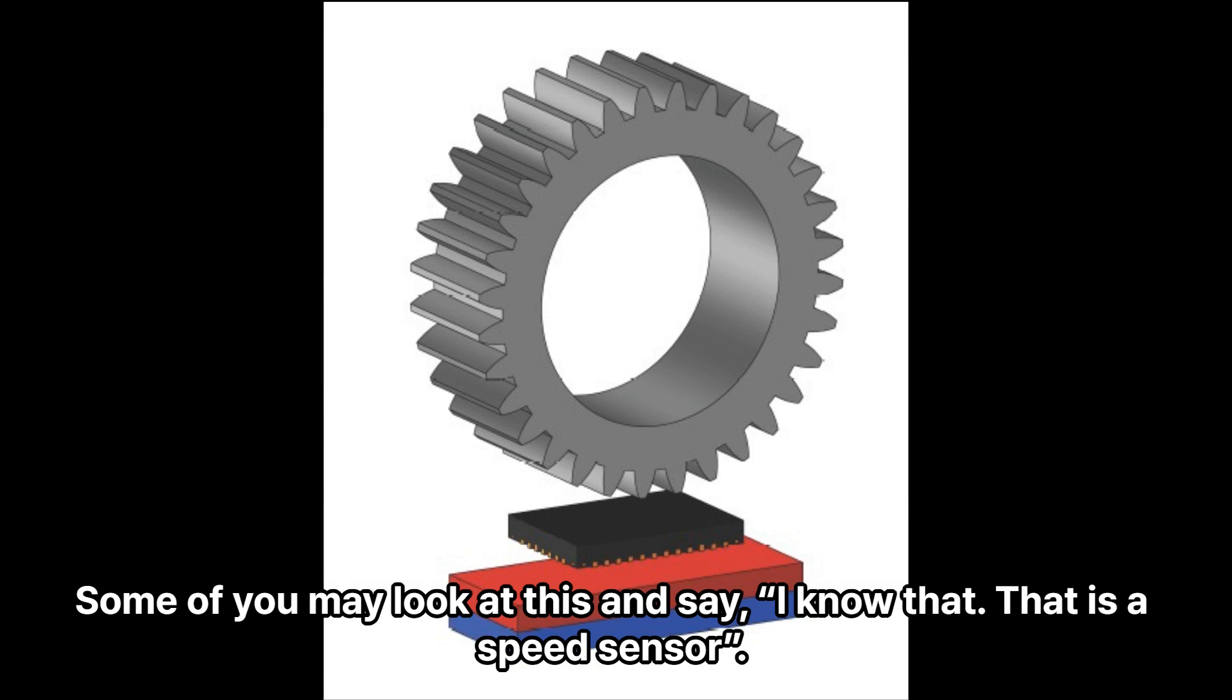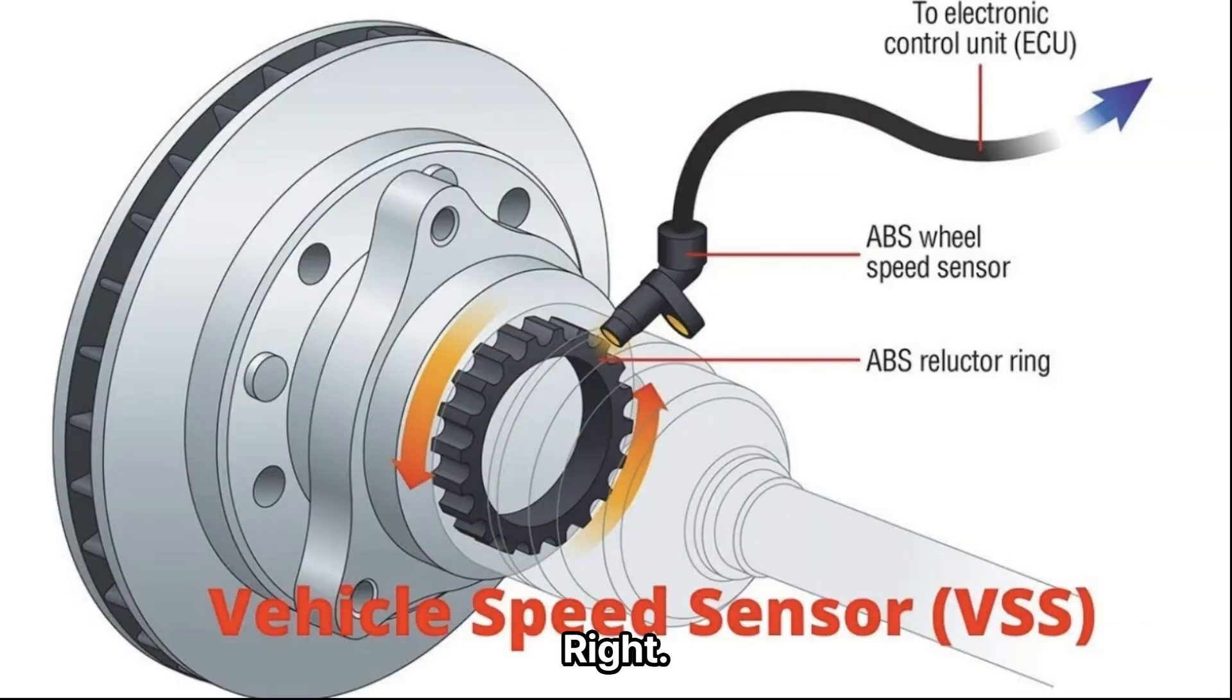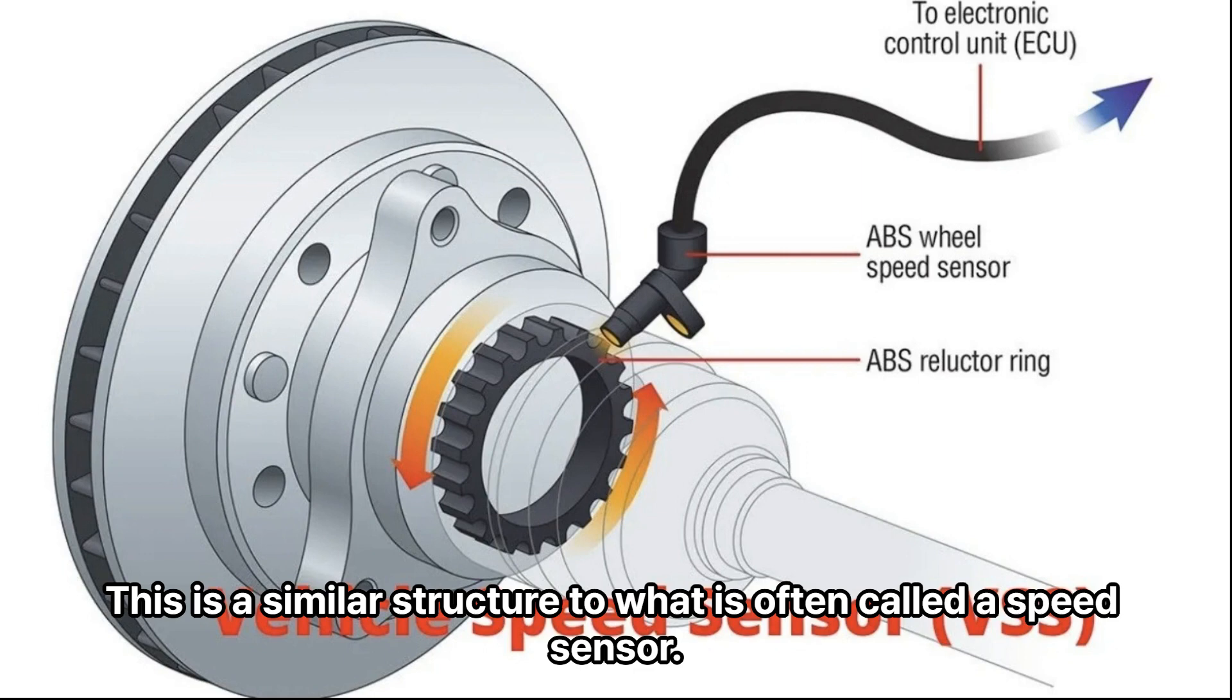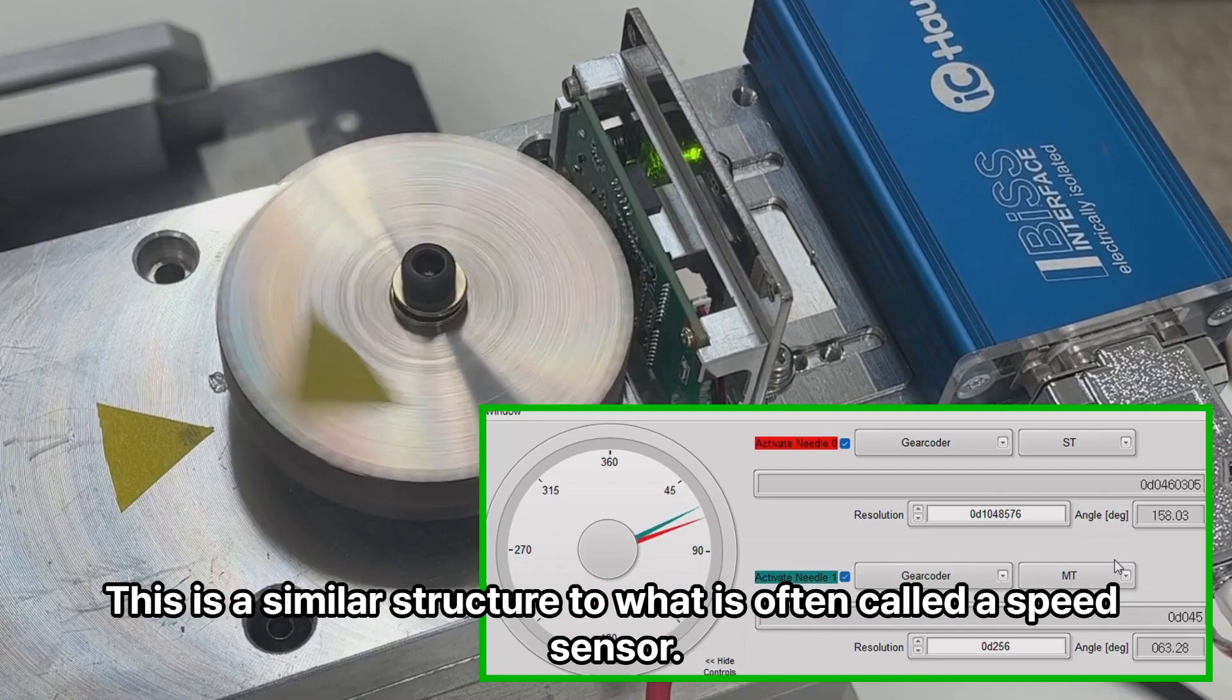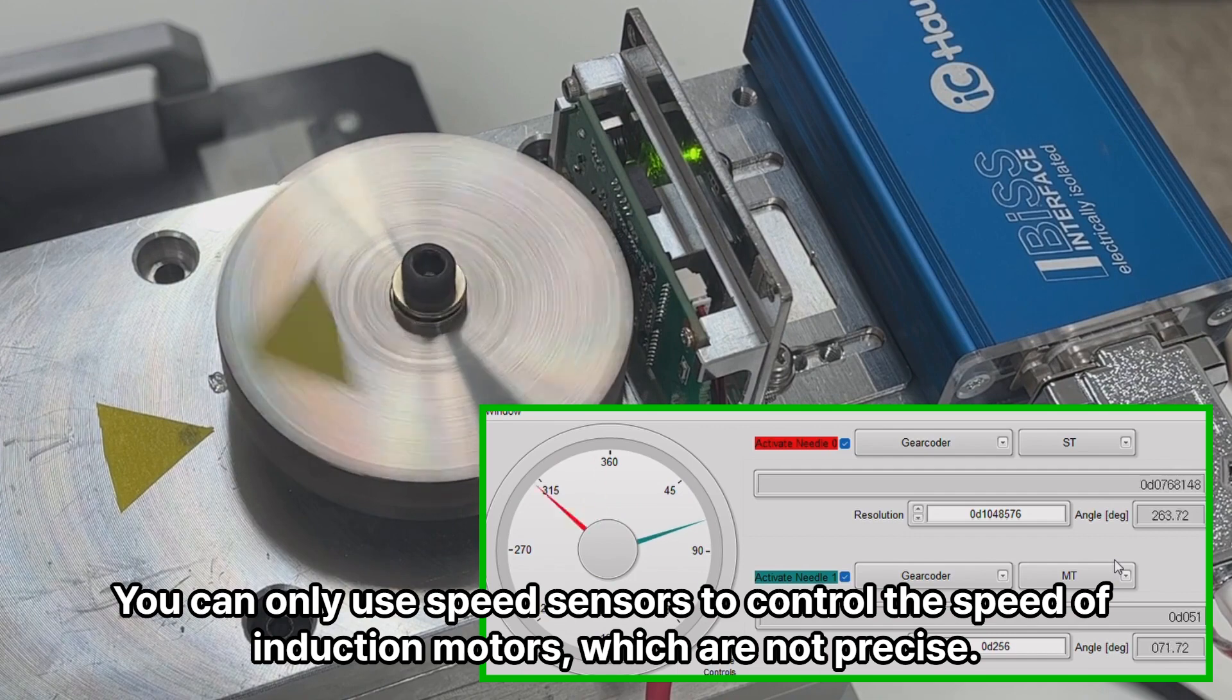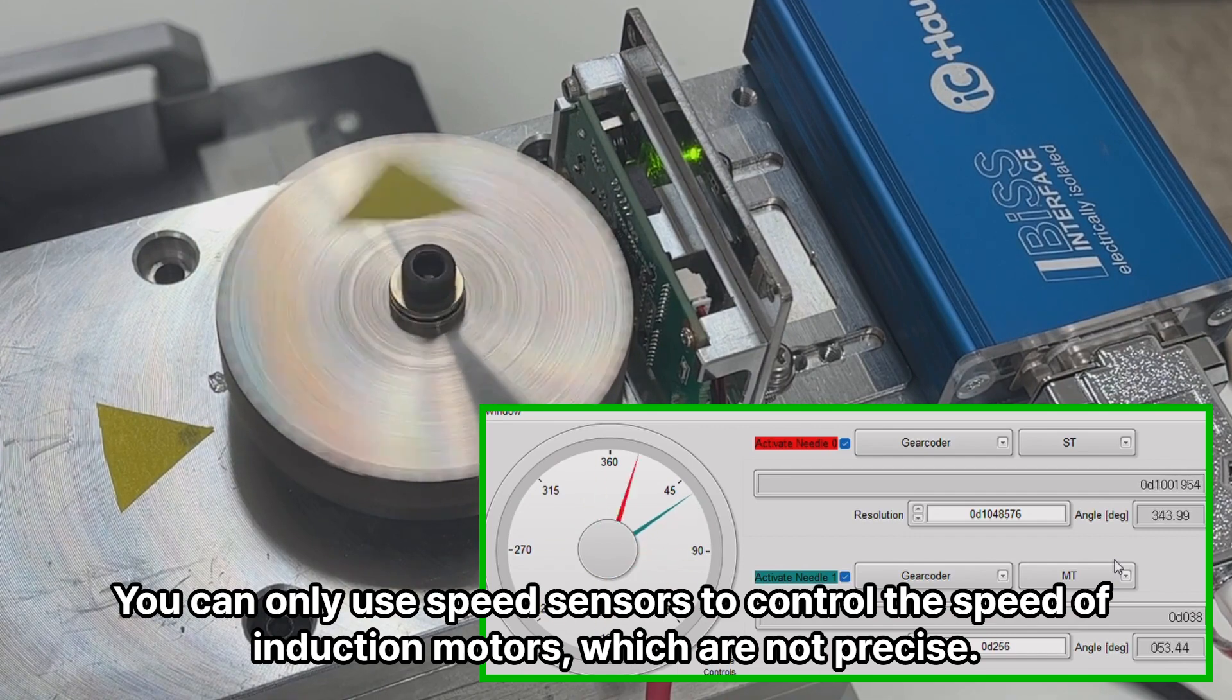Some of you may look at this and say, I know that. That is a speed sensor. Right? This is a similar structure to what is often called a speed sensor. You can only use speed sensors to control the speed of induction motors, which are not precise.